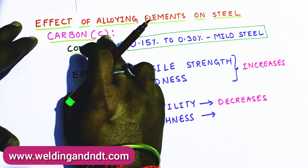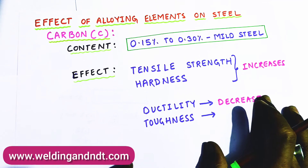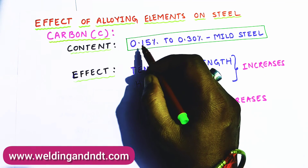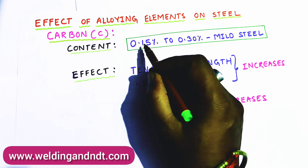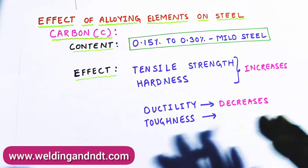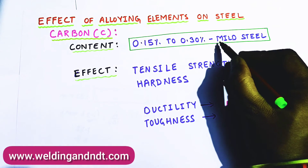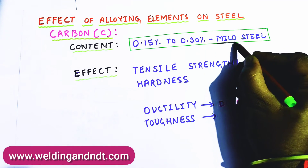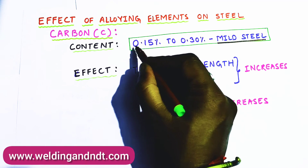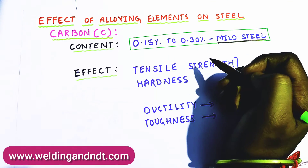First, we will understand about carbon. Mostly carbon in steel is present from 0.1 percent to 1.5 percent, but the steel which we use widely is mild steel, and in mild steel the percentage of carbon is between 0.15 percent to 0.30 percent.